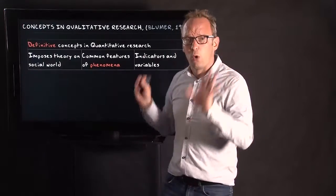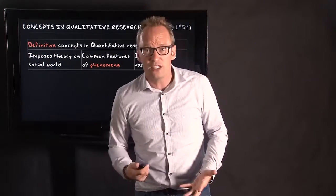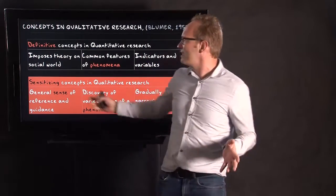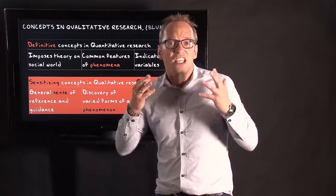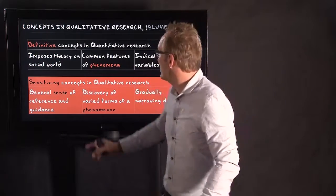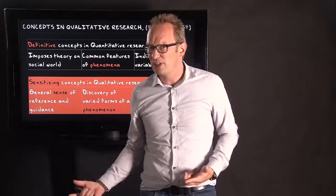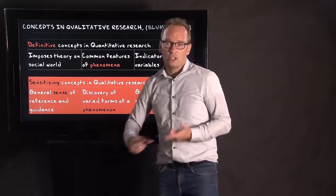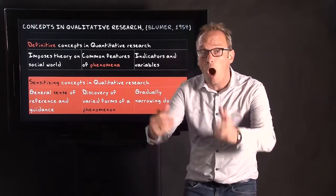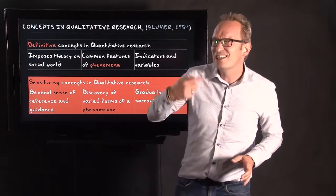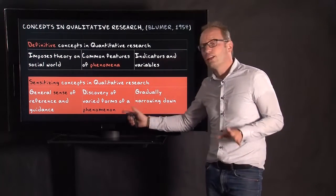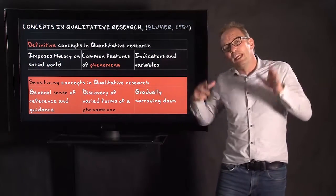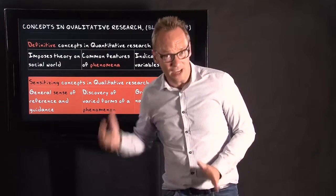Bloomer says the key difference between concepts in quantitative research and concepts in qualitative research is this: we have sensitizing concepts in qualitative research. Sensitizing means you have a general sense of reference and guidance, but it's not completely fixed. You have ideas about poverty, but you go out and find out yourself how it works in a specific situation. You are open for changes to the concept — we might define poverty in a different way — and you try to discover different forms of the phenomenon, gradually narrowing down to clearer definitions.